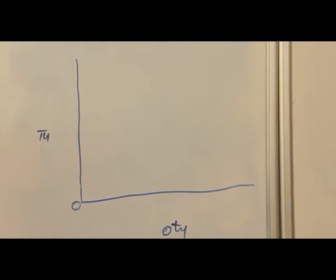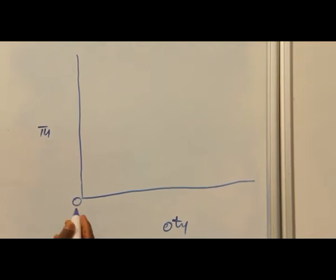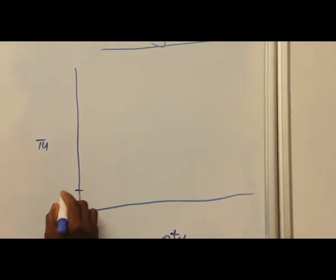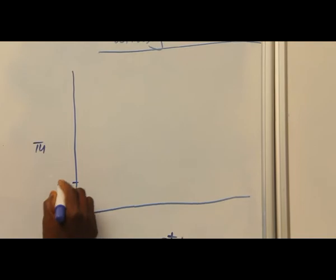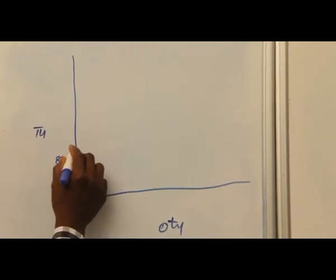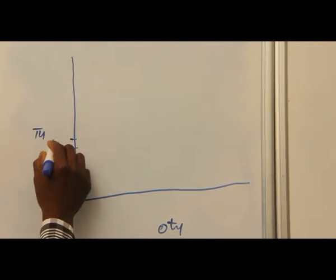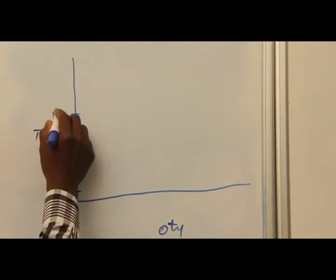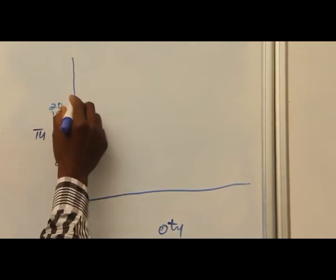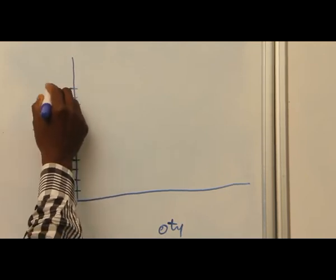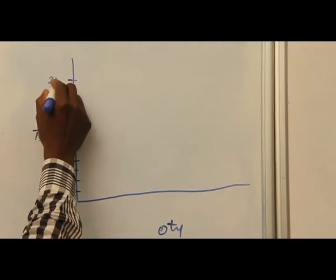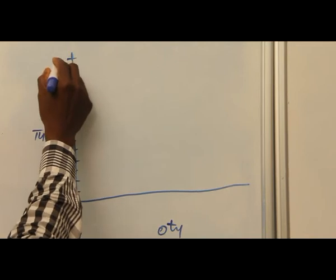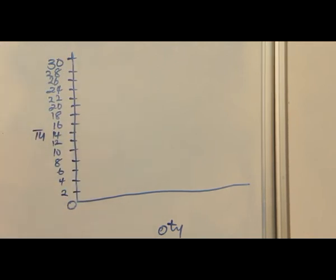So if we take it like 2 here: 2, 4, 6, 8, 10, 12, 14, 16, 18, 20, 22, 24, 26, 28, so we have 30.